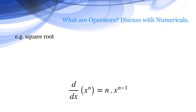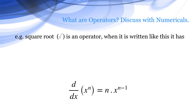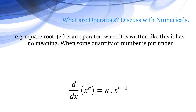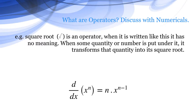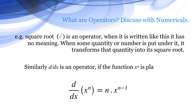For example, square root is an operator. When it is written alone, it has no meaning. When some quantity or number is put under it, it transforms that quantity into its square root. Similarly, d/dx is an operator. If the function x^n is placed with the operator d/dx, it gives n times x^(n-1).